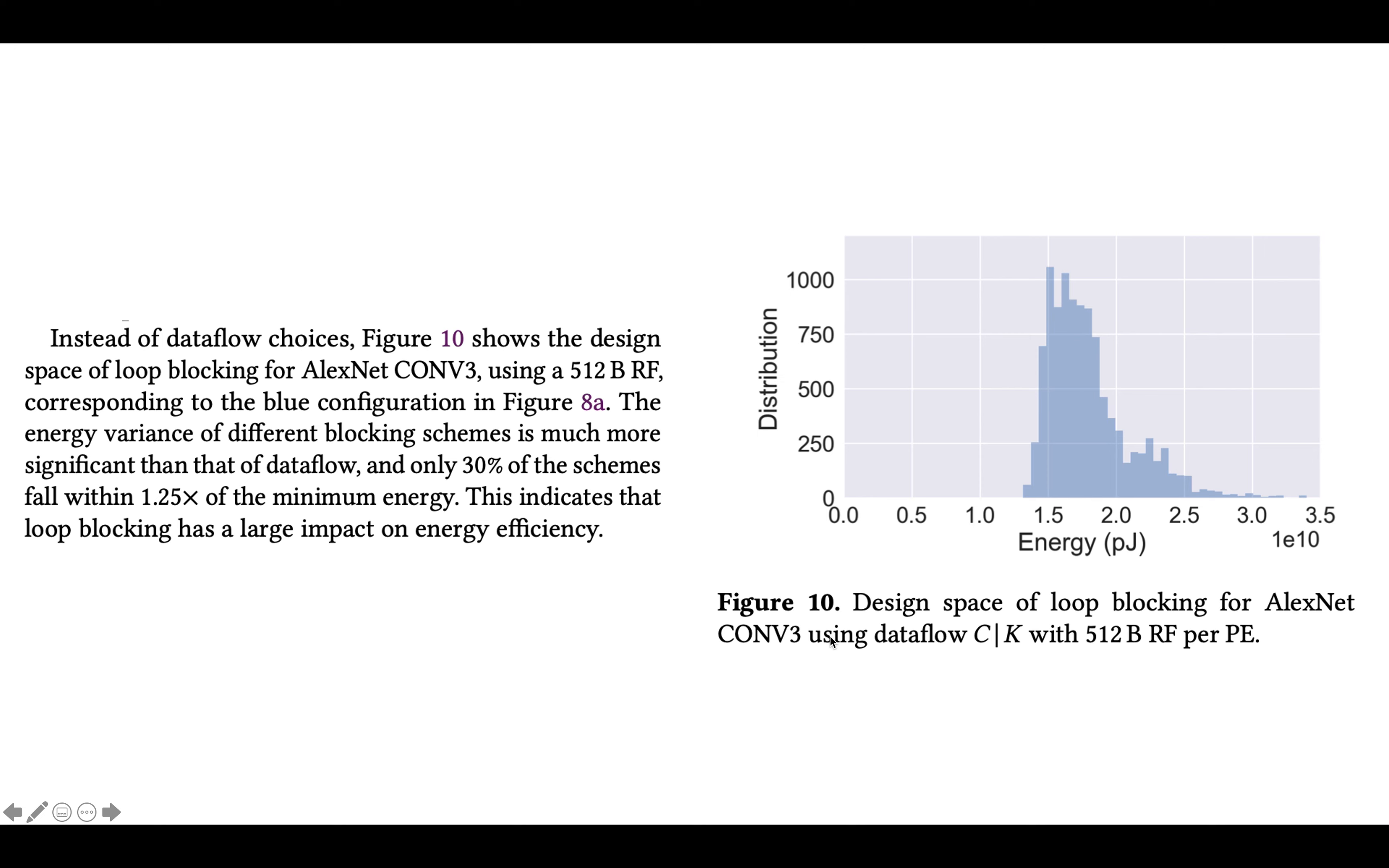This indicates that loop blocking has a large impact on energy efficiency. And what you see here in figure 10, which is the figure that they're referring to, that basically shows a huge number of different blocking schemes using the same data flow and same register file size, is a histogram of the energy efficiency of the blocking scheme and the number of blocking schemes that achieve that energy efficiency.